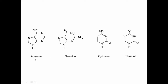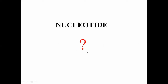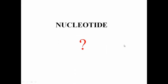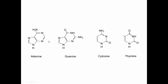Adenine and guanine are the purines with a double ring structure, while cytosine and uracil are the pyrimidines with a single ring structure. So adenine is a purine — it is the 6-aminopurine — and this adenine is involved in the synthesis of FAD.